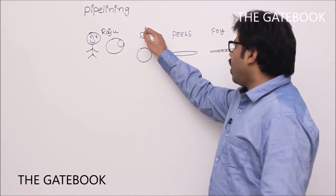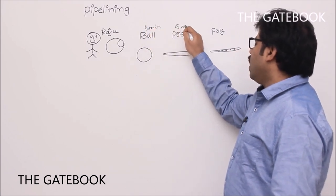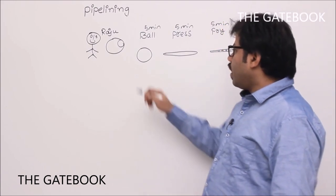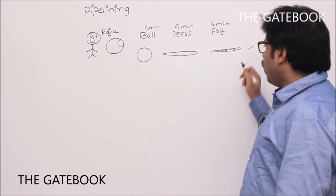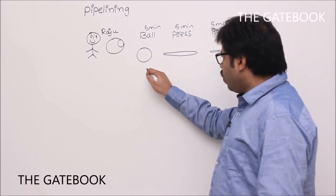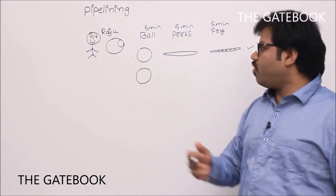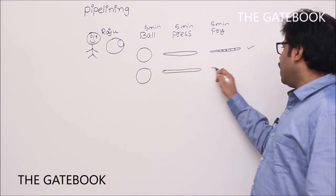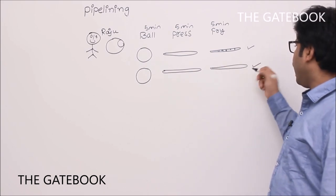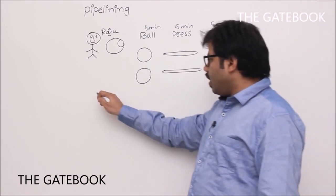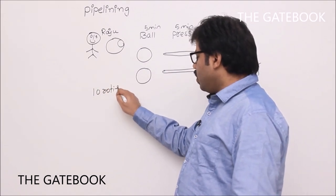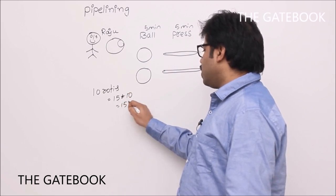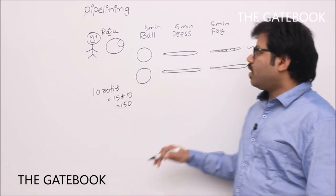Assume each stage takes five minutes. Then if someone orders one roti, Raju will take 15 minutes to serve it. If you ask for two rotis, he repeats the entire process — make a ball, press it, fry it — another 15 minutes. So two rotis take 30 minutes. If there are 10 rotis to be prepared, he will take 15 minutes times 10, which is 150 minutes. That is his inefficiency.